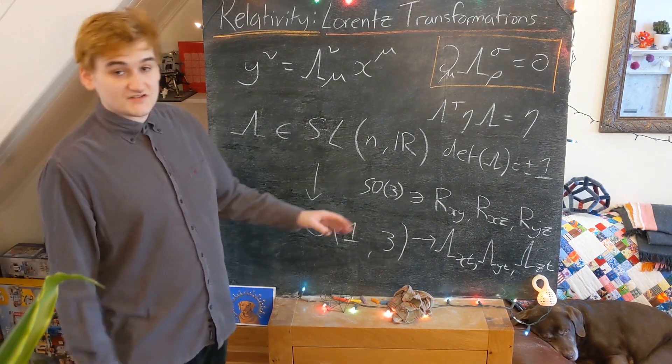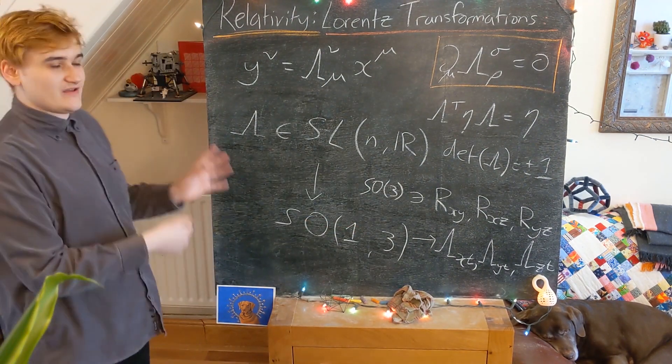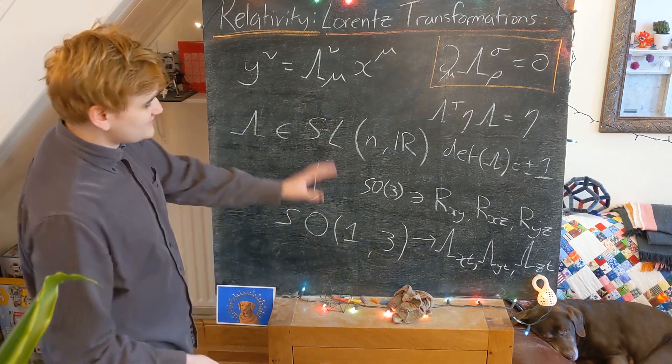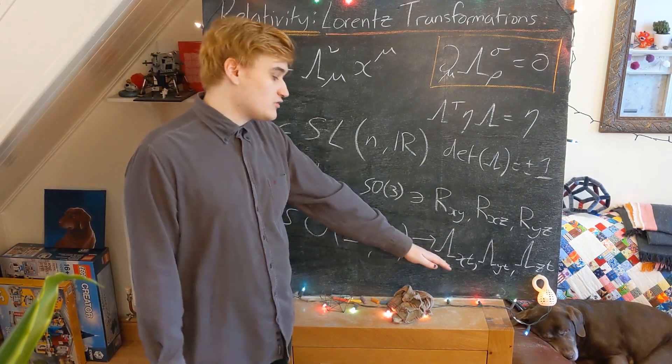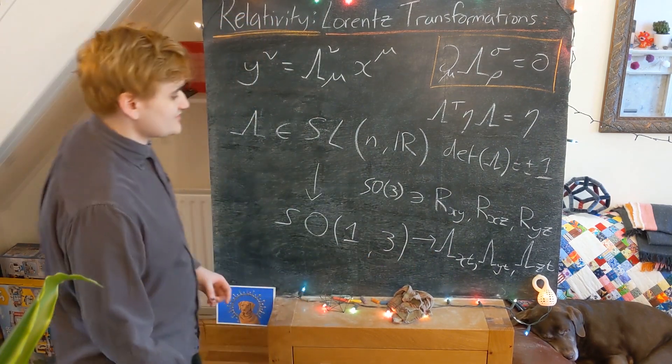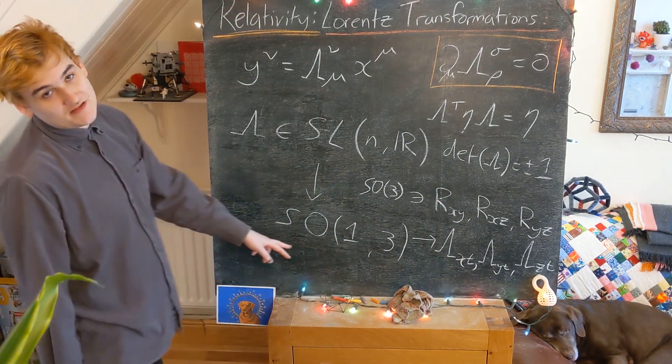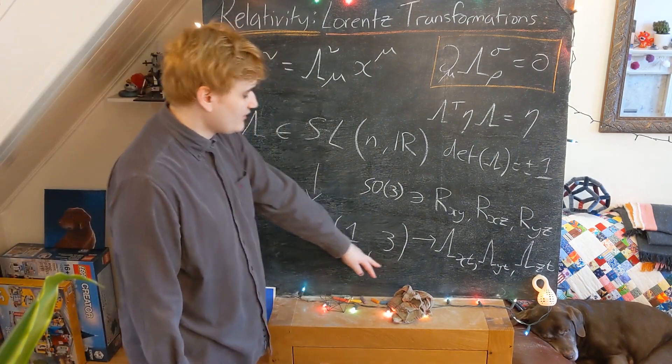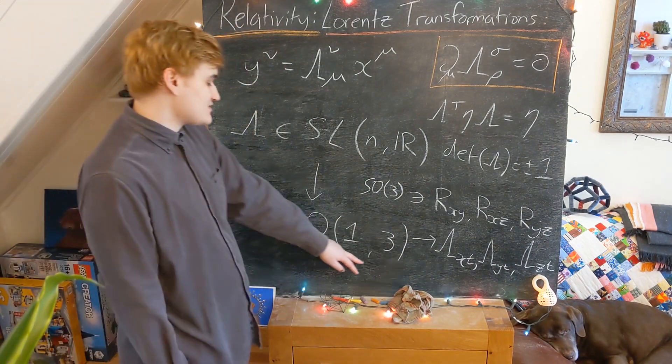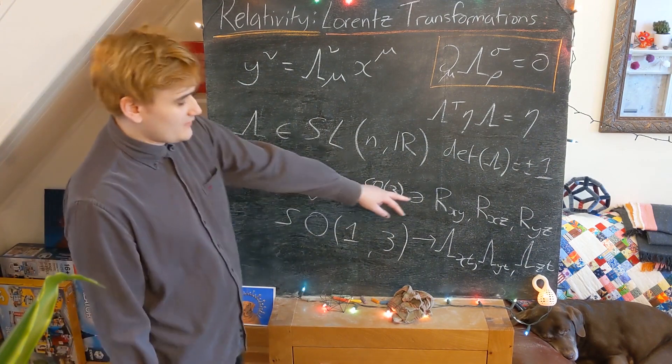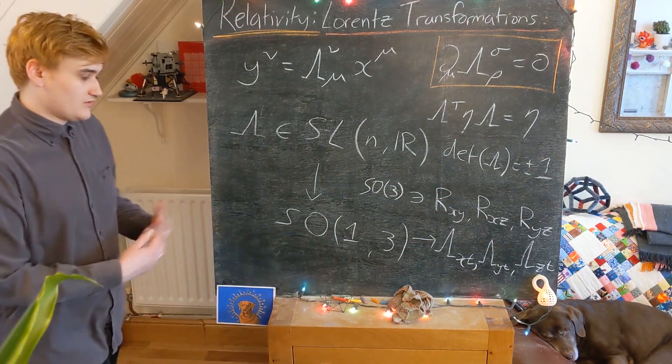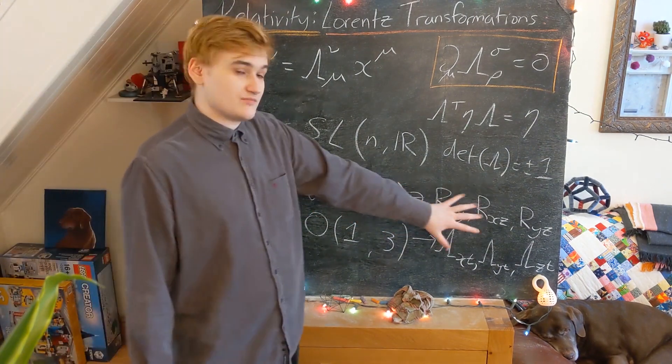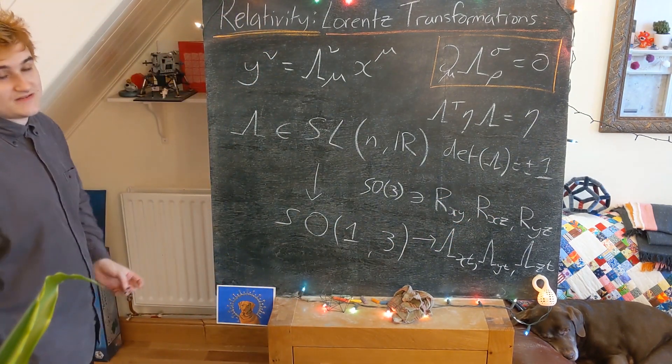But now simply, just by having a bit of knowledge of group theory and how these groups are constructed, we can be fairly sure that these are all of the possible Lorentz transformations. You can just simply look at the dimensionality of this group. You're going to find it's going to be a six-dimensional group. And so these are the six possible elements, or rather, these are the six possible representations of our group elements.